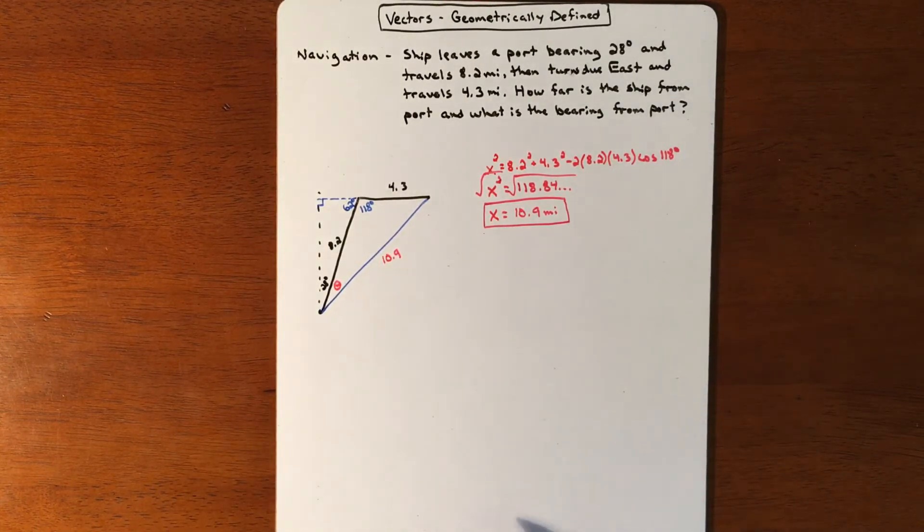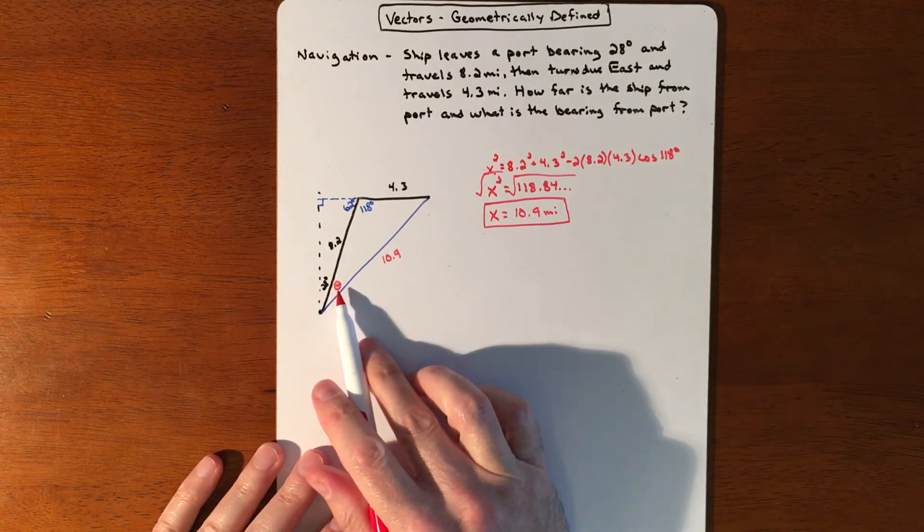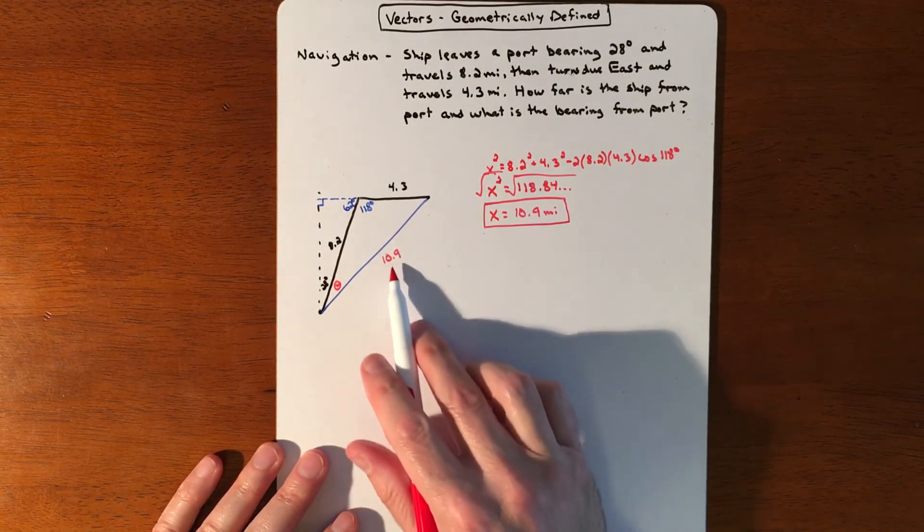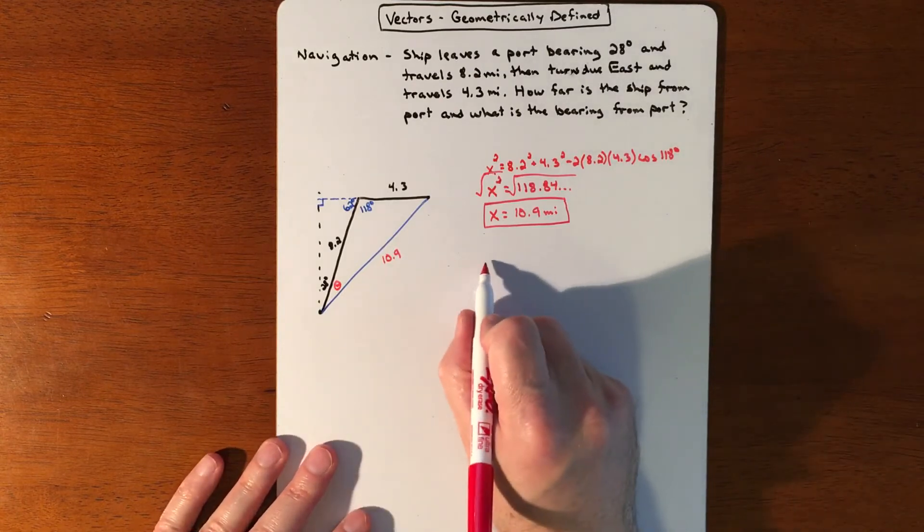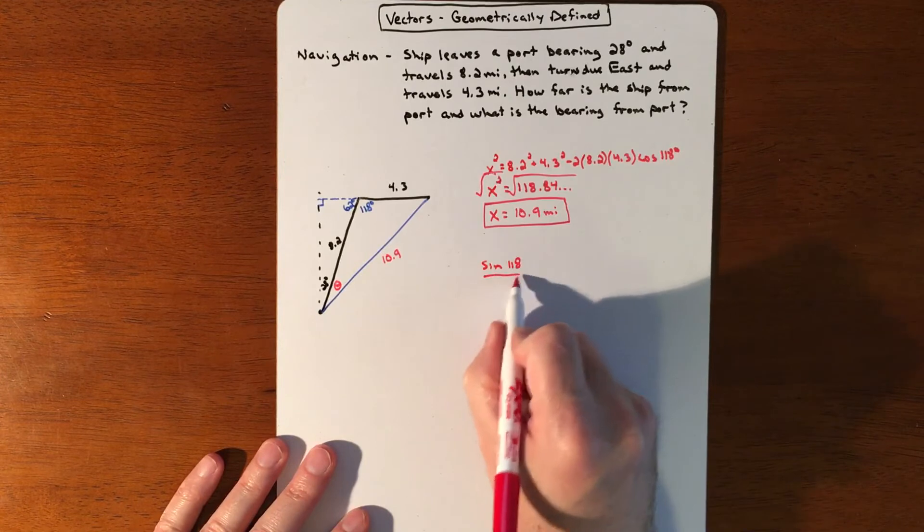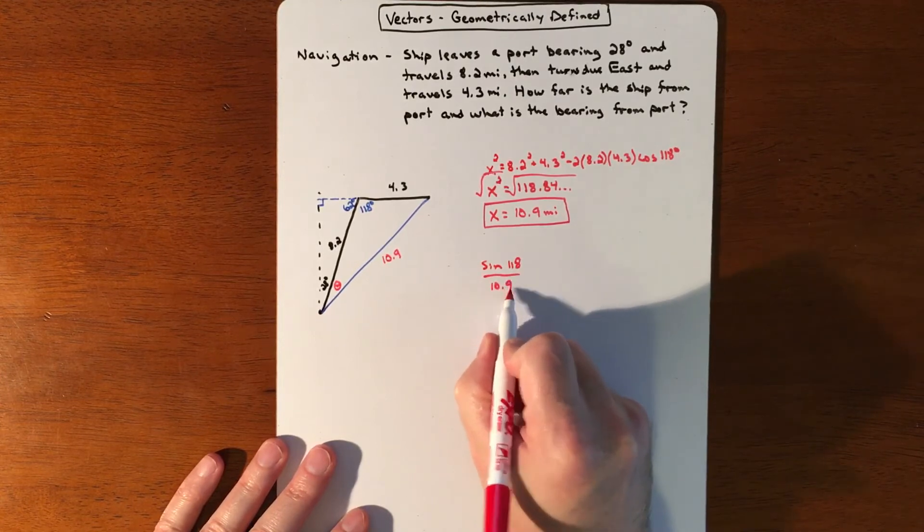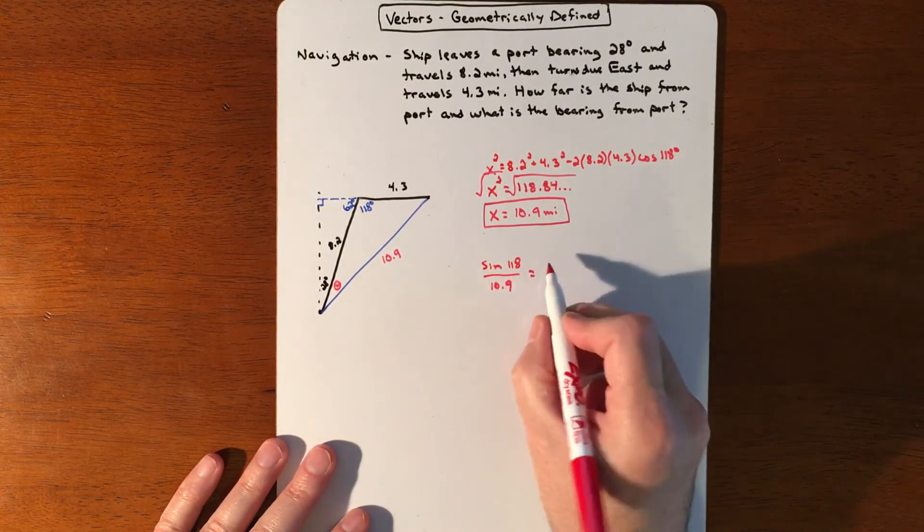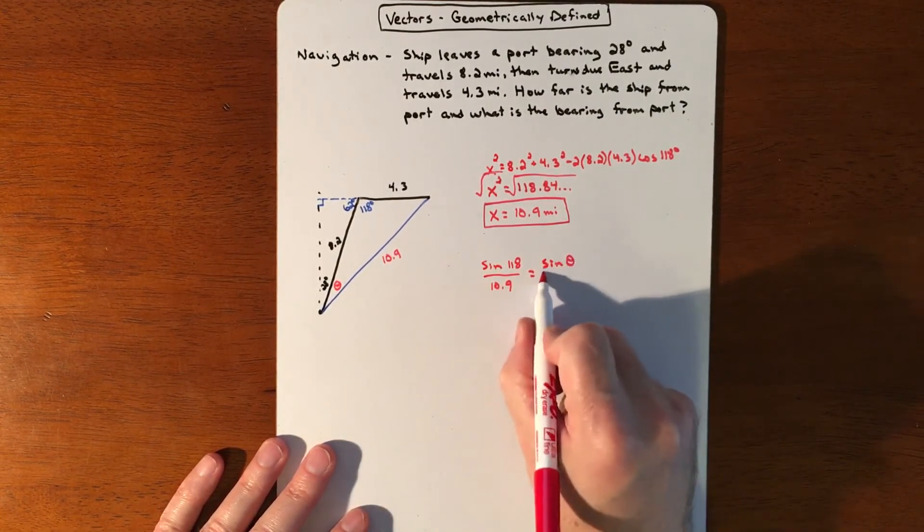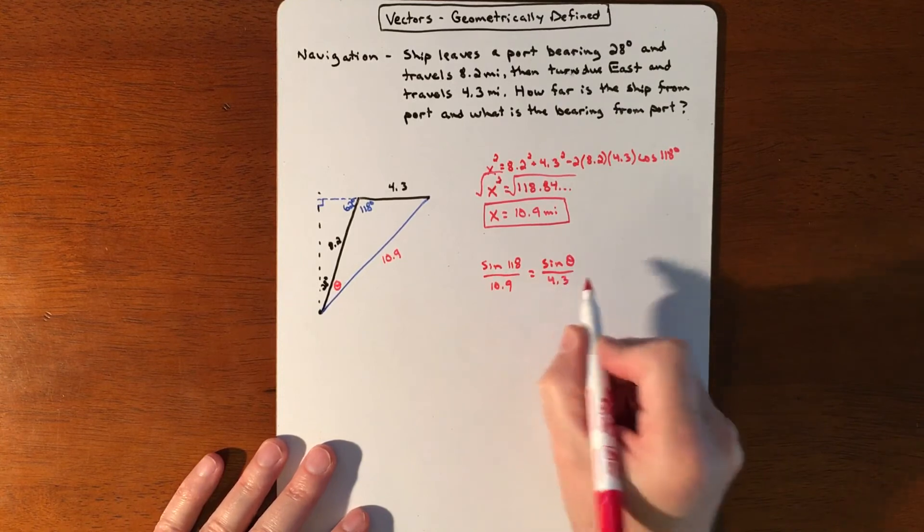To figure out that angle, that now is a law of sines problem because we have one full fraction. We have the angle on the side across from it. So we can create sine of 118 over 10.9. That's what I mean by one full fraction. And then we're going to do this one, sine of theta over 4.3.